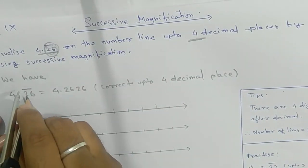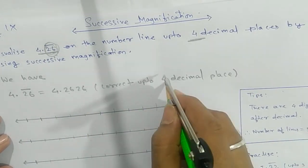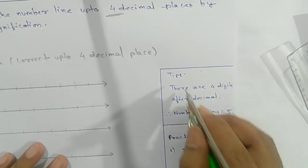Up to four decimal places, that means 2, 6 will repeat: 2, 6, 2, 6. Up to four decimal places, we know how many number lines we need. There are four digits, so the number of lines must be five.